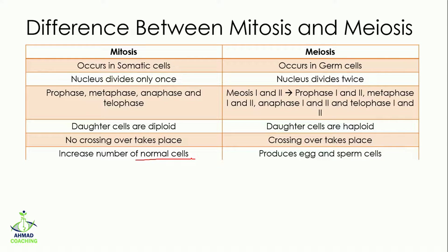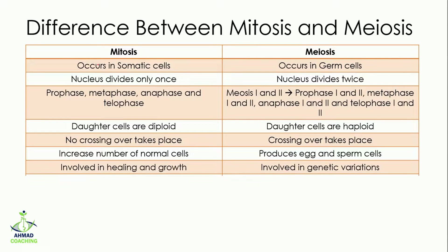Mitosis increases the number of normal cells. If you get an injury on your finger, that injury is healed because the number of cells increases at the site of injury. Also, small babies grow into adults because of mitosis. In meiosis, egg and sperm cells are produced, which are used during fertilization.